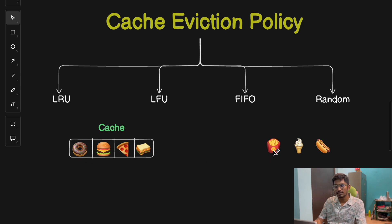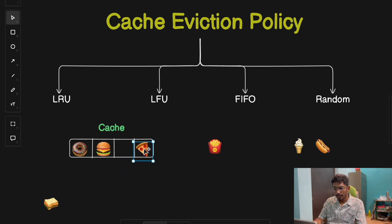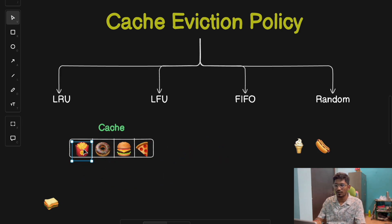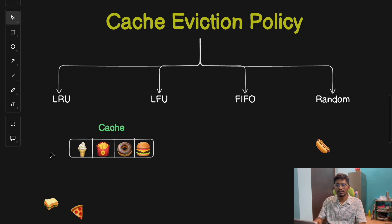Now let's say someone searches for fries, but the cache is full with no room for new items. In LRU, we remove the item that was least recently used — in this case, sandwich, because it was accessed the longest time ago. We remove it, making space for fries. If someone then searches for ice cream, the same process repeats: all items shift and ice cream is placed at the most recent position. That's how LRU works.